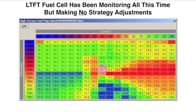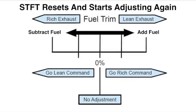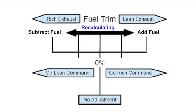Now, the long-term fuel trim cell has been sitting there and monitoring all of this all the time. But, it has been making no strategy adjustments because it had achieved 14.7 to 1 stoichiometric. Now, the short-term fuel trim at this point is going to reset and start adjusting all over again. So, we're back at zero.